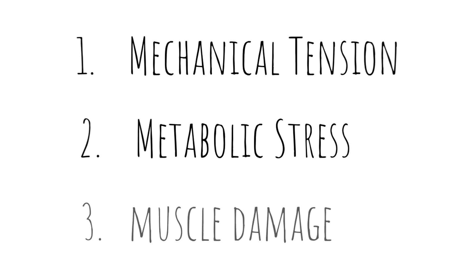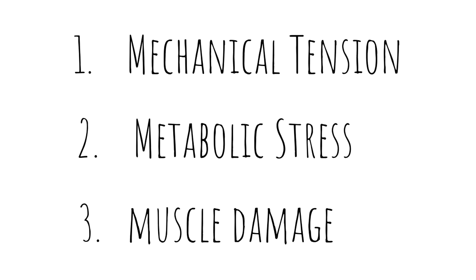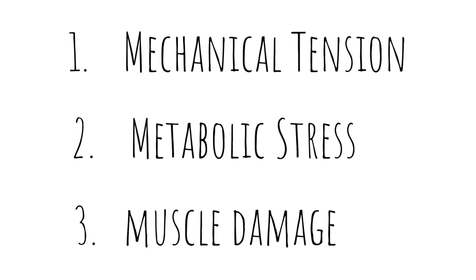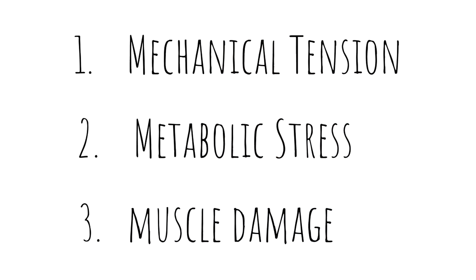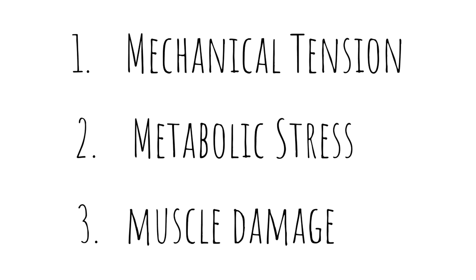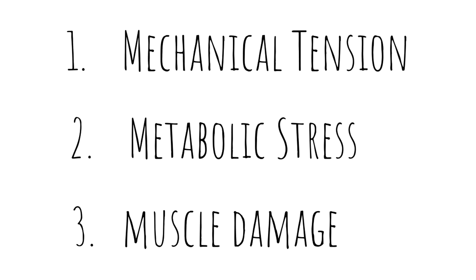The last concept Schoenfeld discusses is muscle damage — the breaking down of muscle fibers, which then repair and grow larger. This can be thought of as localized specific muscle damage from resistance training. The actual significance of muscle damage compared to other concepts is highly debated. This is not a hierarchy — these are just three concepts that are important when you want to understand how muscle grows.